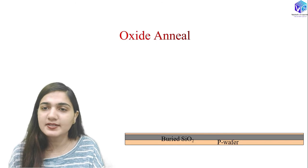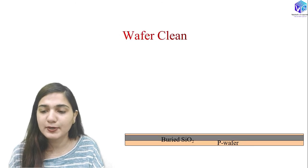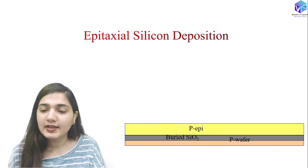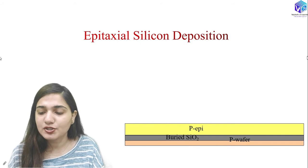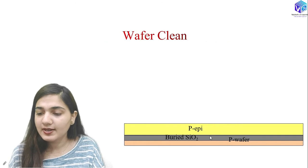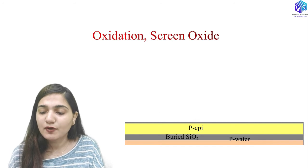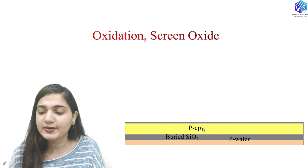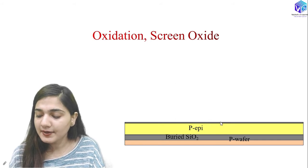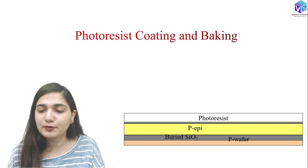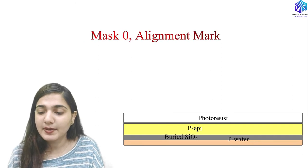After forming the buried SiO2 layer, we perform an oxide anneal to obtain a single-crystal structure, followed by wafer cleaning and then epitaxial silicon layer deposition. This results in a P-type epitaxial layer over the buried SiO2. After that, we do wafer cleaning and oxidation to form a thin screen oxide layer over the P-type epitaxial region.